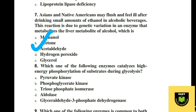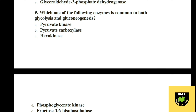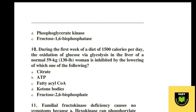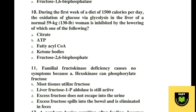Question 8. Which one of the following enzymes is common to both glycolysis and gluconeogenesis? Options: A pyruvate kinase, B pyruvate carboxylase, C hexokinase, D phosphoglycerate kinase, E fructose-1,6-bisphosphatase. The correct option is D, phosphoglycerate kinase.